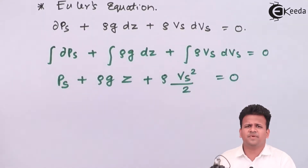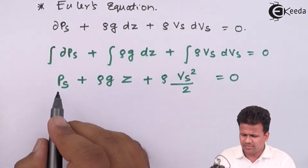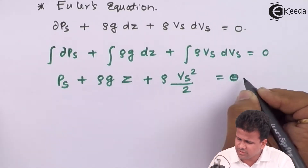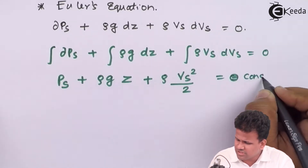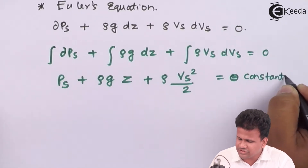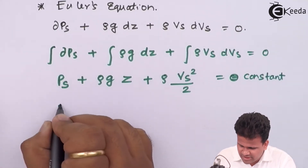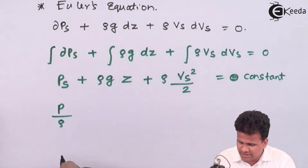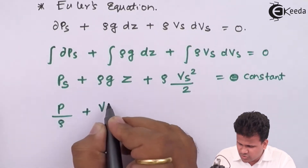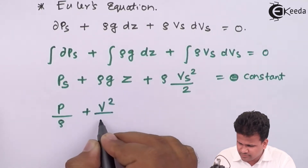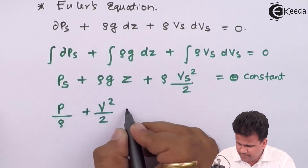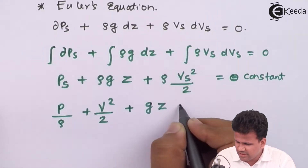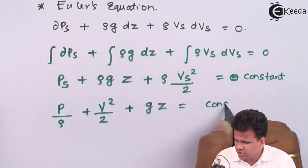We can remove the subscripts from this equation. This won't equal zero anymore; it will equal a constant of integration. So we write this as: P/ρ + V²/2 + gz = constant.